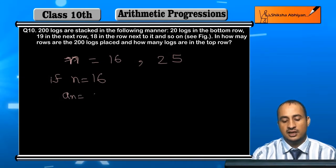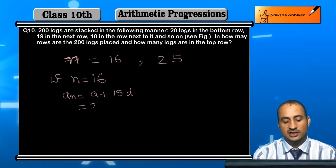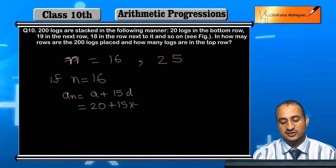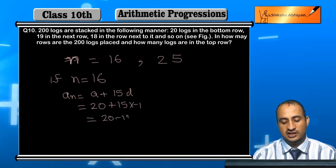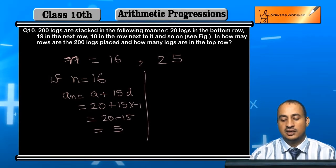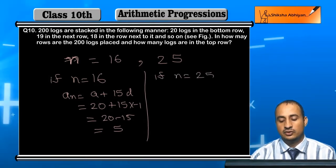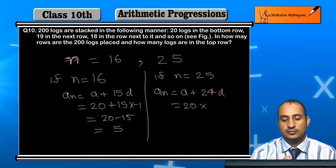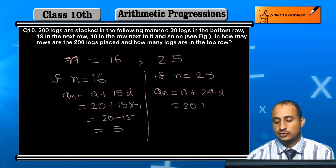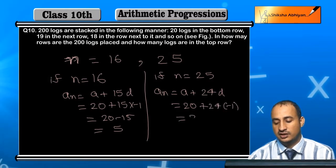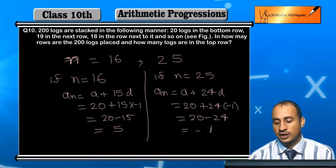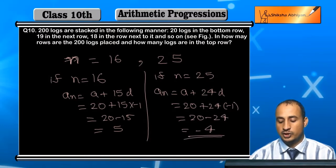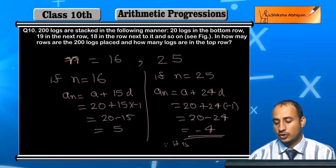An equals a plus (n minus 1)d, that is 20 plus 15 times minus 1, which equals 20 plus negative 15, that is 20 minus 15, which equals 5. Wait, that's not right. Let me recalculate: 20 plus 24 times minus 1 equals 20 minus 24, which equals minus 4.